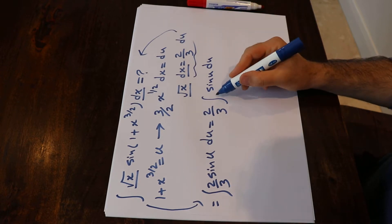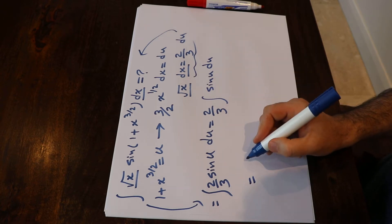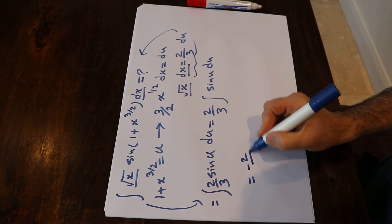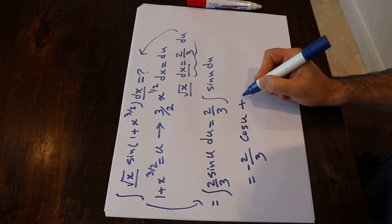The integral of sine u du from the table of integrals is equal to minus cosine u. So minus times 2/3 is minus 2/3 times cosine u plus c, the constant.